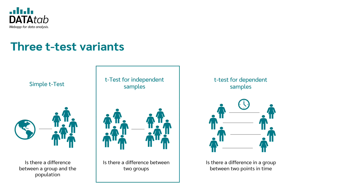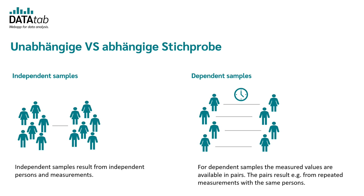This video is about the t-test for independent samples. In the description you will find links to my videos and tutorials about the other t-tests. Independent samples are made up of independent persons and measurements. A person in one group has no relation to a person in the other group — they are two completely separated groups. Independent samples result from independent persons or measurements.